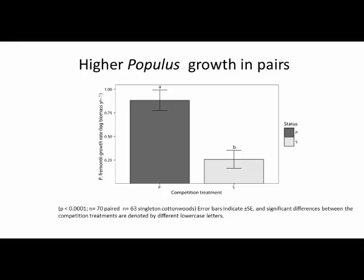We did, however, find higher Populus growth in paired plants. Unexpectedly, when Populus was paired with a Salix, it grew significantly faster than when it was a singleton growing by itself.